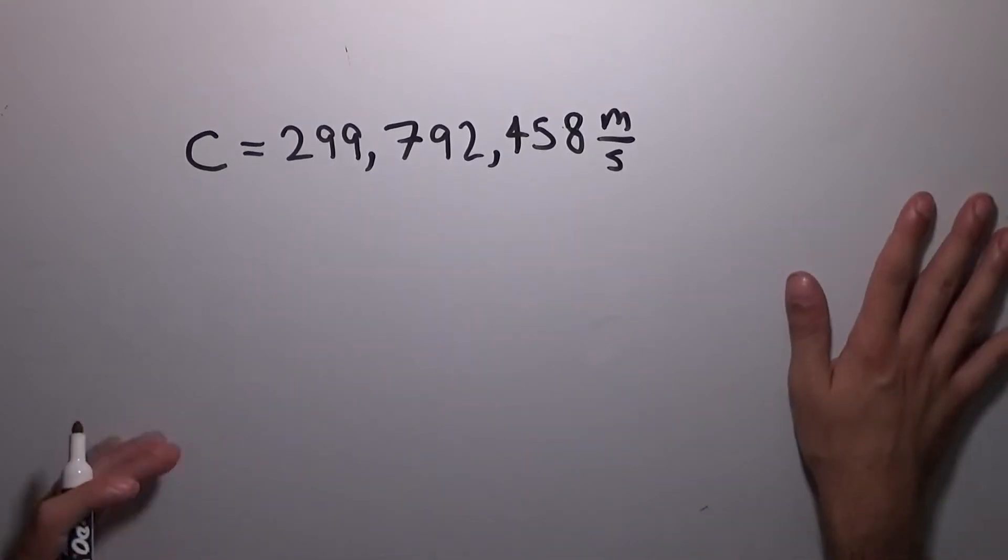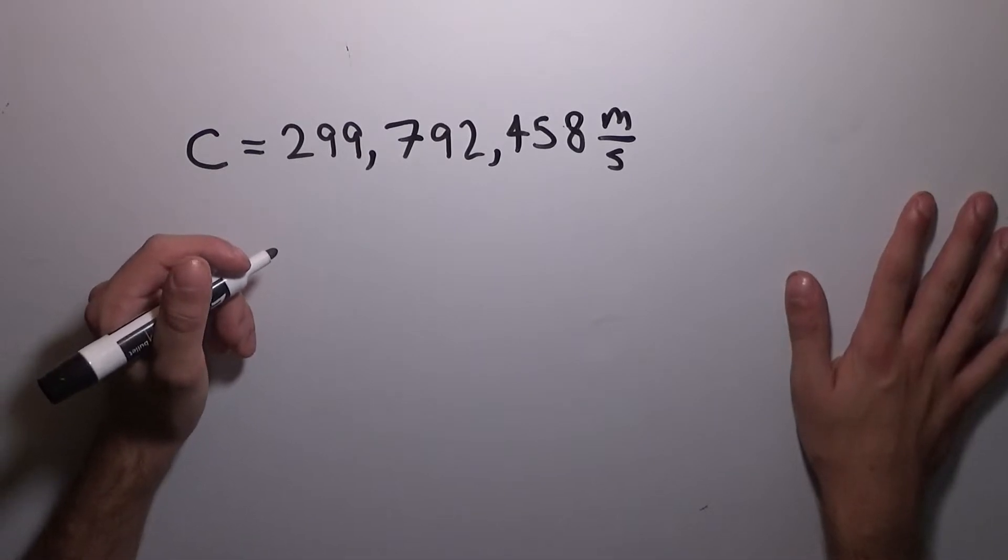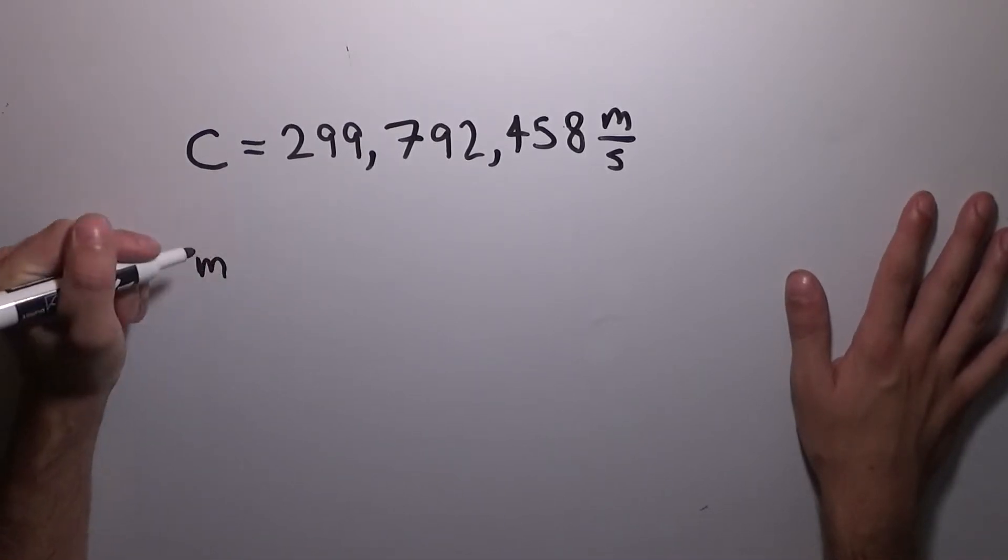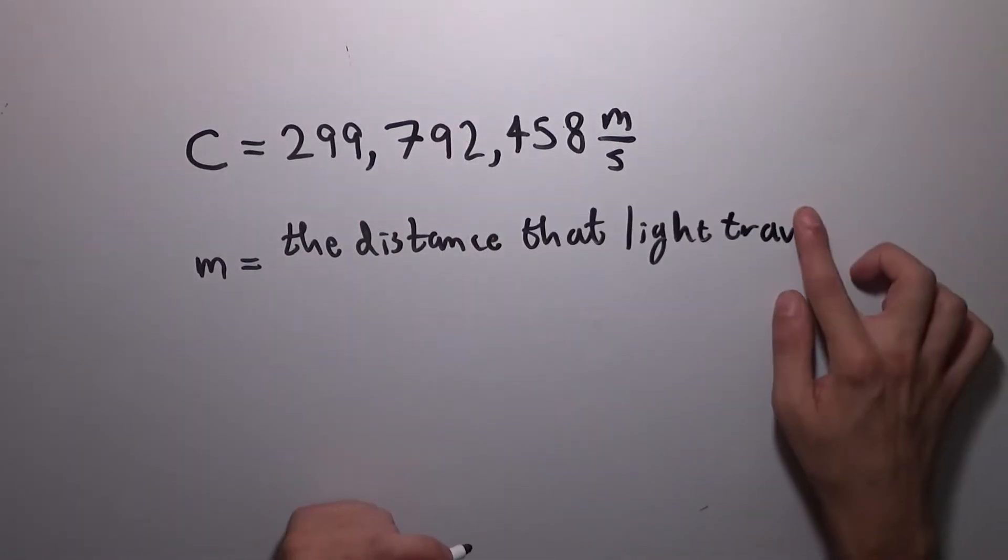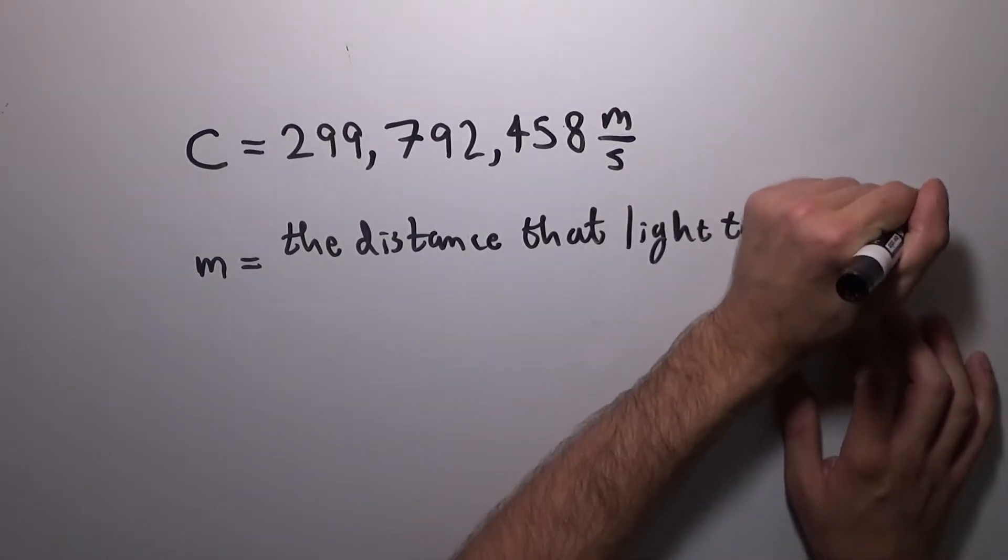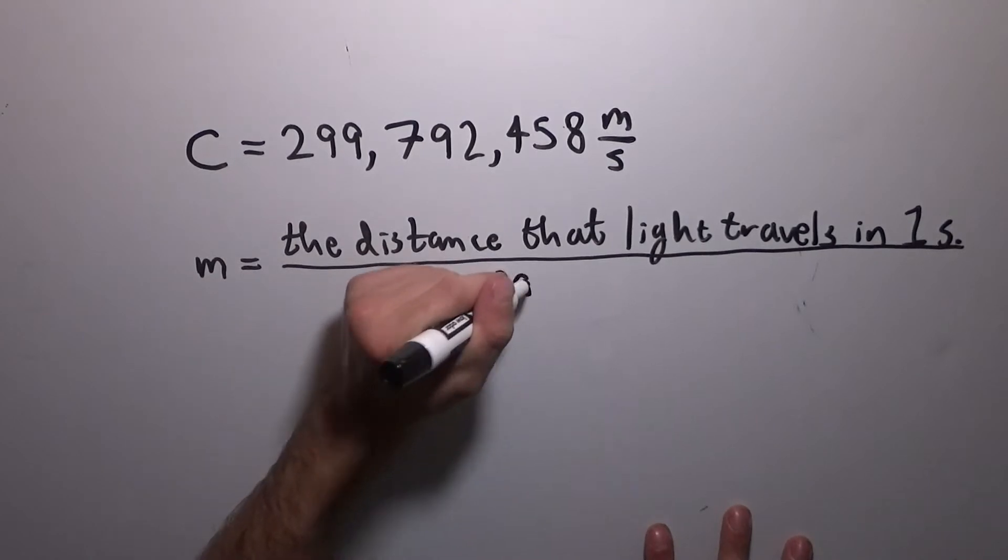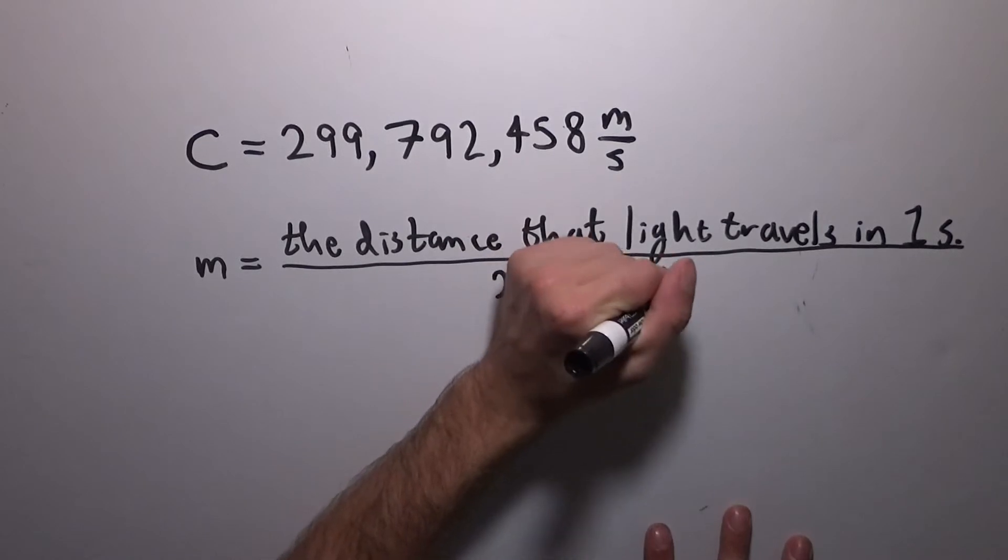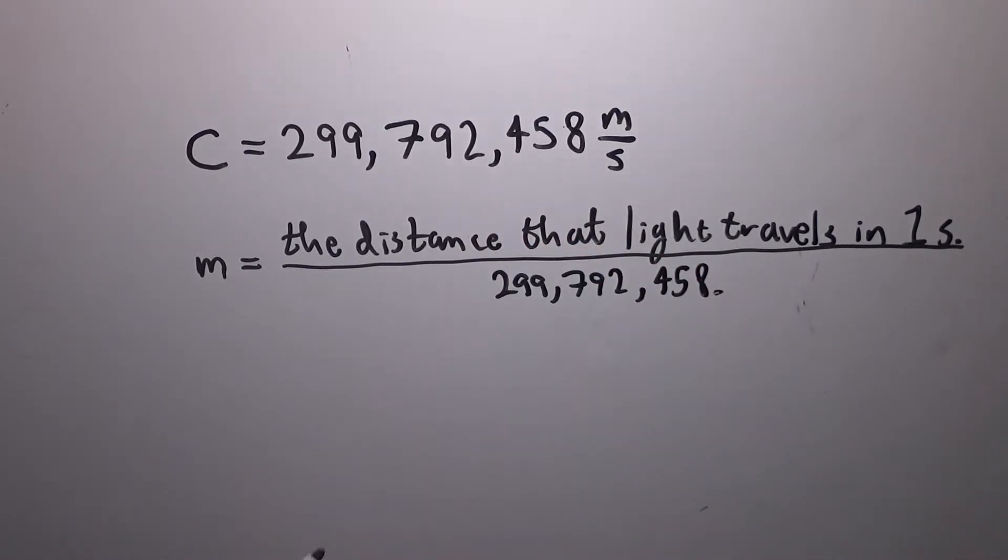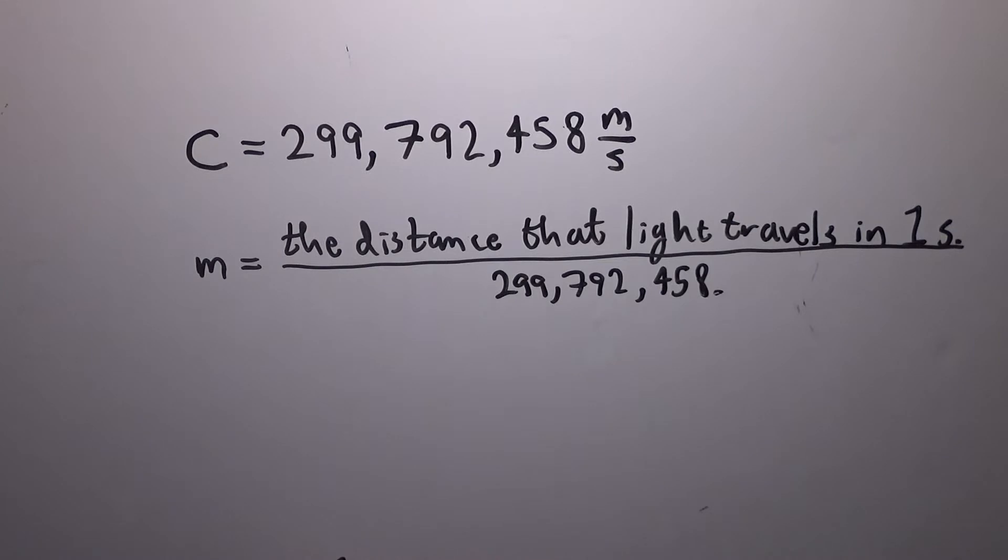The reason it's this precise number is because we now define the meter as the distance that light travels in one second divided by the number 299,792,458. Now, that doesn't really answer the question, because all I've done is shift around the equation a little bit, or this definition here, moreover.